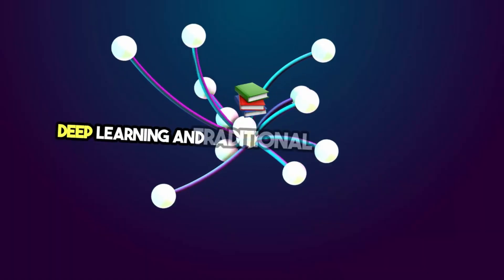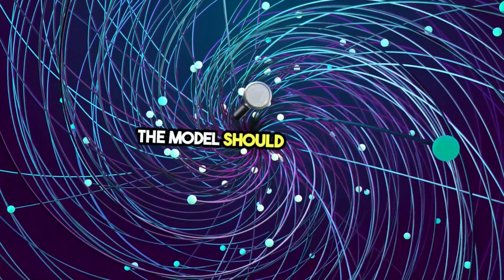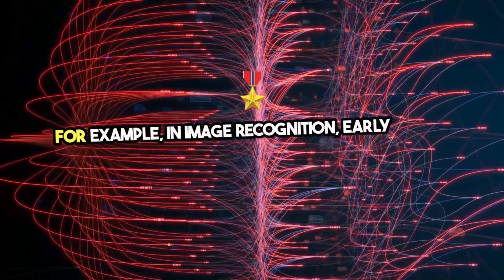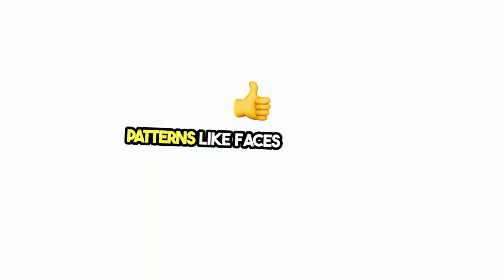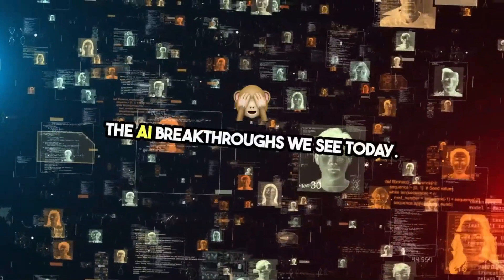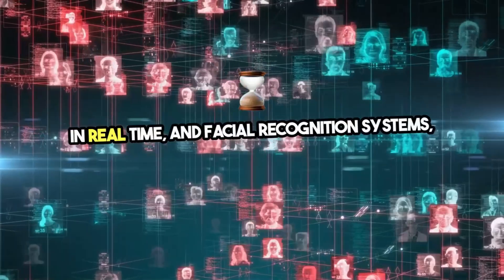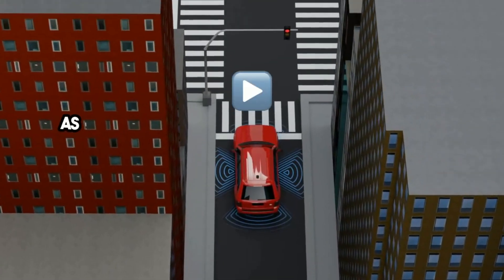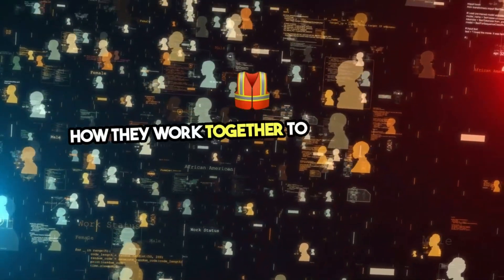One of the key differences between deep learning and traditional machine learning is how it handles feature extraction. In traditional machine learning, human experts often define the features or attributes the model should focus on. But in deep learning, the model automatically discovers the most relevant features during training. For example, in image recognition, early layers of the neural network might identify simple edges or shapes, while deeper layers might recognize more complex patterns like faces or objects. Deep learning is behind many of the AI breakthroughs we see today. It's what powers technologies like self-driving cars, which can process vast amounts of sensor data in real time, and facial recognition systems, which can accurately identify people even in challenging conditions. It's also used in areas like healthcare, where deep learning models analyze medical images to detect diseases that may not be visible to the human eye. As we move forward, we'll take a closer look at neural networks, which are at the heart of deep learning. We'll explore how these networks are structured, and how they work together to solve complex problems.